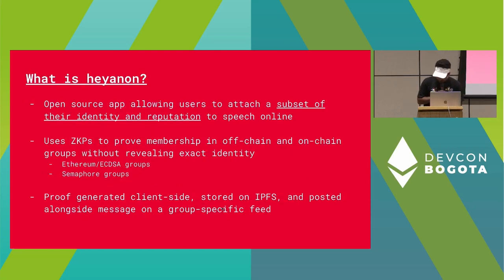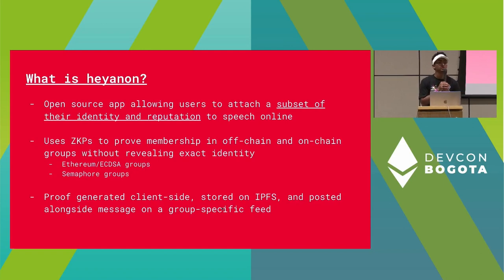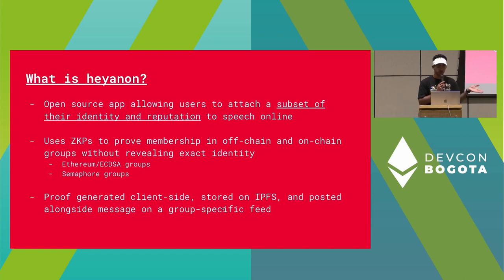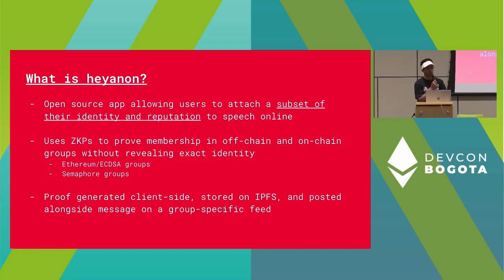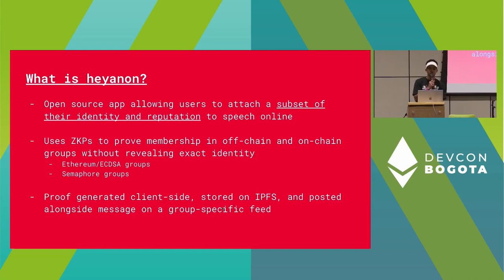What Hanon is attempting to be is an open-source app to allow users to attach a subset of their identity and reputation to speech online, so they can choose selectively what they actually want to attach with everything they say. It uses zero-knowledge proofs to prove membership in both off-chain and on-chain groups without revealing your exact identity.